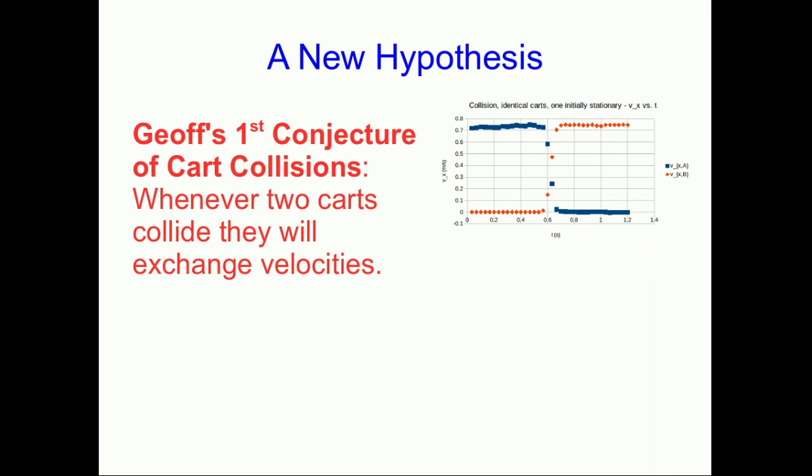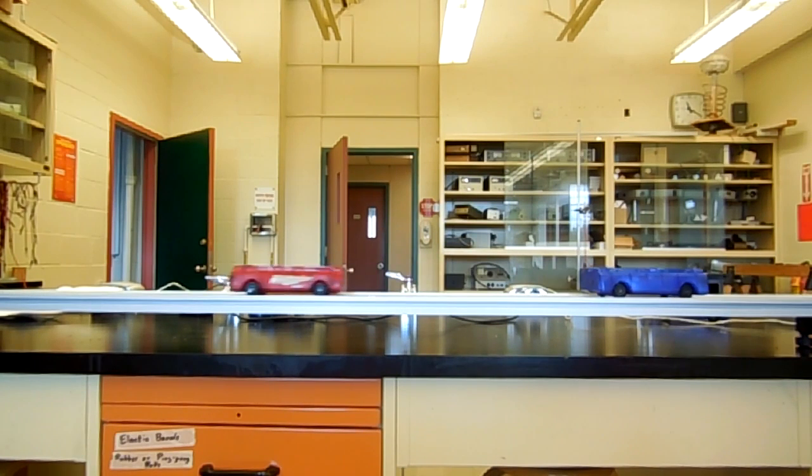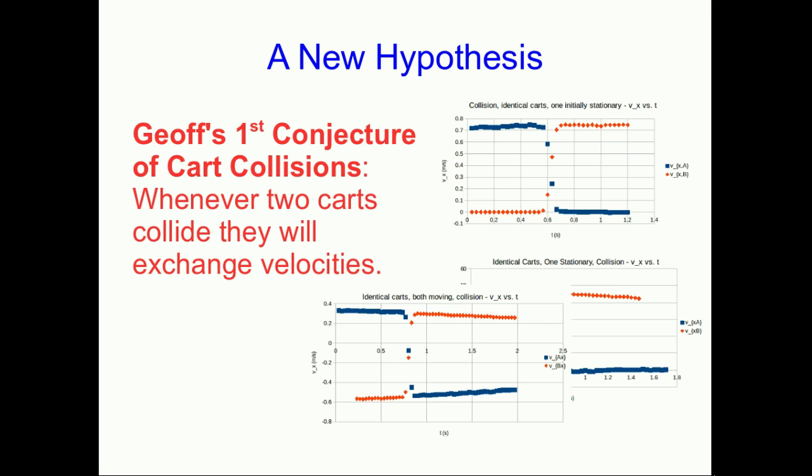We should vary some things, right? So we can vary the speeds of the carts. Here's another collision very similar to the first one. Other than the fact that there's some friction messing things up, it sure looks like the carts exchanged velocities there. Well, what if we make both of the carts move? Here's the Vx versus t for that, and again other than friction getting in our way a little bit, it sure looks like the carts just exchanged velocities.